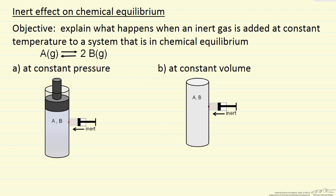We're going to look at the effect of adding an inert on chemical equilibrium. The idea is we have a system at constant temperature, a gas phase reaction of one mole reacting to two moles, and then we add an inert at constant pressure, or we add it at constant volume. We want to know what happens in each case. Let's look first at the constant pressure case.